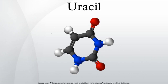In RNA, uracil binds to adenine via two hydrogen bonds. In DNA, the uracil nucleobase is replaced by thymine. Uracil could be considered a demethylated form of thymine. Uracil is a common and naturally occurring pyrimidine derivative.